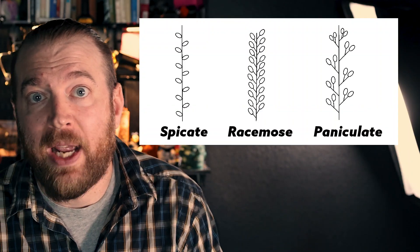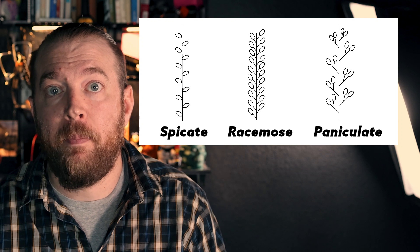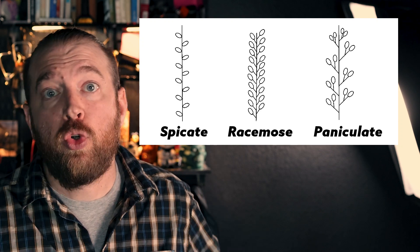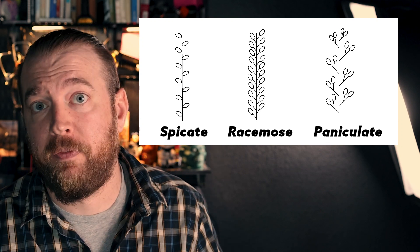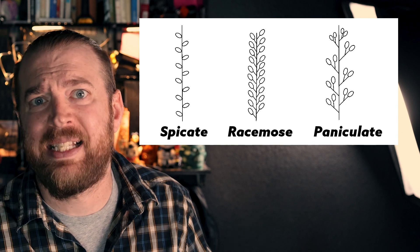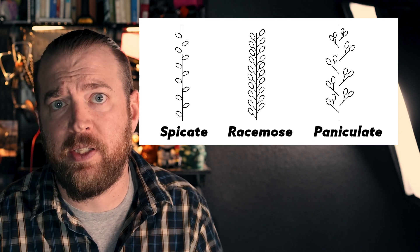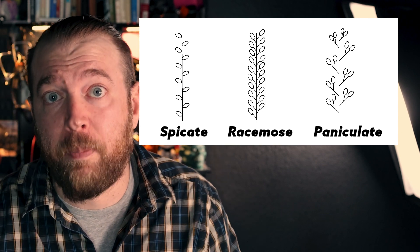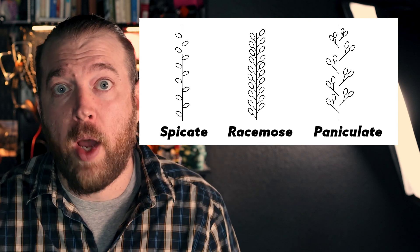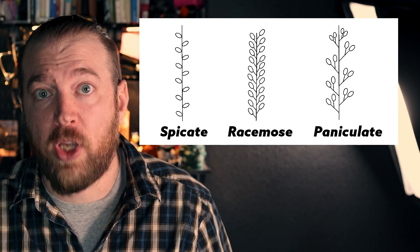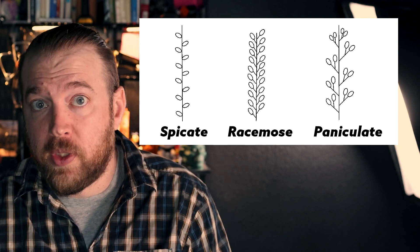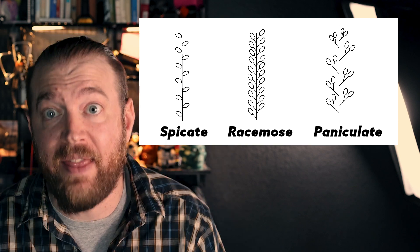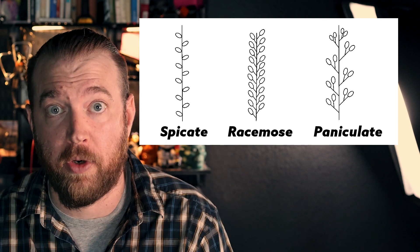Spike flowers extend directly off of that main flower stalk. Racemose flowers don't grow directly from the flower stalk, but rather from small stem-like appendages. And paniculate inflorescences — paniculate flowers — are even more complicated still: you have your one main flower stalk, and then from that there are those little stem-like appendages that branch, and then that's where the flowers grow from.